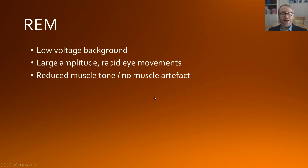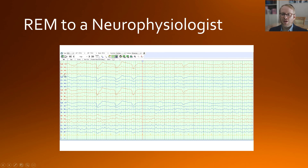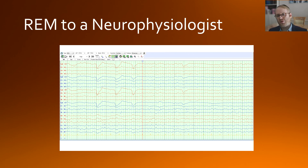Moving into REM sleep, we have a low voltage background, large amplitude rapid eye movements, and reduced muscle tone — or from a neurophysiologist's perspective, a lack of muscle artifact. REM sleep looks remarkably like wakefulness except that we don't have the muscle artifacts normally associated with wakefulness, making it still quite straightforward to define. From a polysomnographer's perspective, muscle tone channels would also confirm this, noting that muscle tone decreases progressively through non-REM stages 1 to 3, and in REM there should be atonia — though emerging thinking around REM with and without atonia is another story.